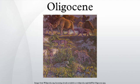The Oligocene is often considered an important time of transition, a link between the archaic world of the tropical Eocene and the more modern ecosystems of the Miocene. Major changes during the Oligocene included a global expansion of grasslands and a regression of tropical broadleaf forests to the equatorial belt.